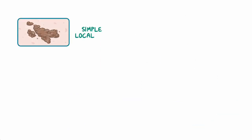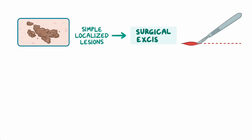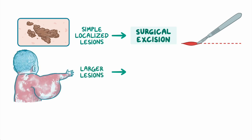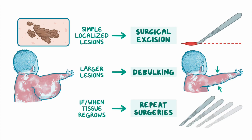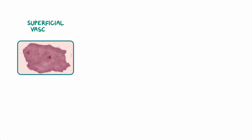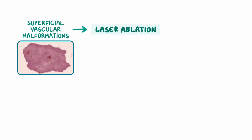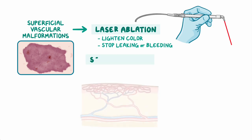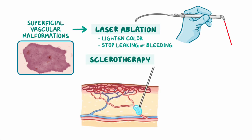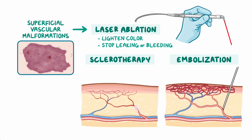In the case of simple localized lesions, overgrown tissue may be surgically excised. In larger lesions, debulking or removal of part of the lesion may be performed. If or when the tissue regrows, repeated surgeries may be needed. Superficial vascular malformations may be treated with laser ablation, most commonly to lighten color of capillary malformations or to stop leaking or bleeding from superficial lymphatic malformations. Sclerotherapy, where a chemical is injected into the defective vessel causing it to scar down and close off, or embolization, where injections are given to clot off the defective vessel artificially, may be performed.